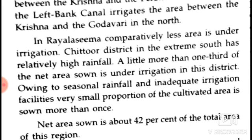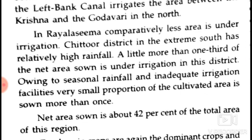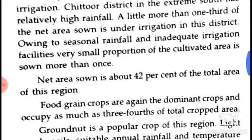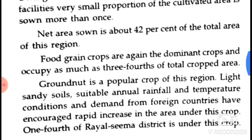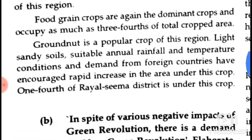Rayalaseema comparatively has less area under irrigation. Chittoor district in the extreme south has relatively higher rainfall. A little more than one-third of the net sown area is under irrigation in this district. Due to seasonal rainfall and inadequate irrigation facilities, a very small proportion of the cultivated area is sown more than once. Net sown area is about 42 percent of the total area, and food grains are the dominant crops, occupying as much as three-fourths of the total crop area.